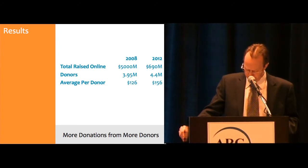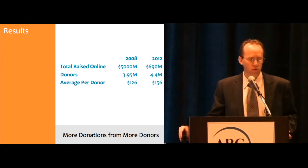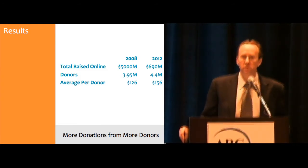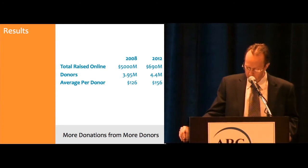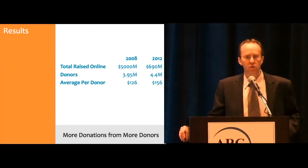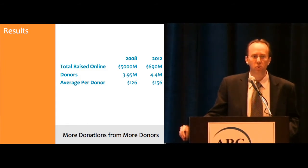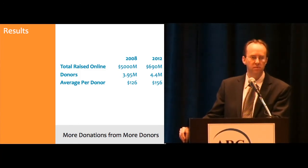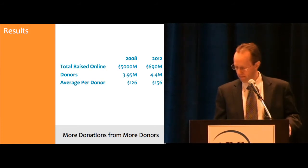When you talk about results, nothing is more bottom line than revenue. Obama for America using digital marketing best practices raised their bottom line in every conceivable way — more donors, higher average donation per donor. How would an 11% increase in customers look for your company in one year? Or a 24% increase in average purchase size? Or a 38% year-over-year revenue increase? That's essentially what they achieved.